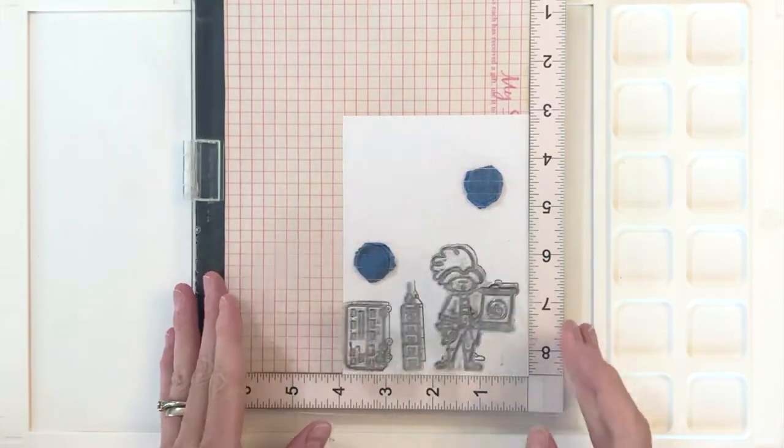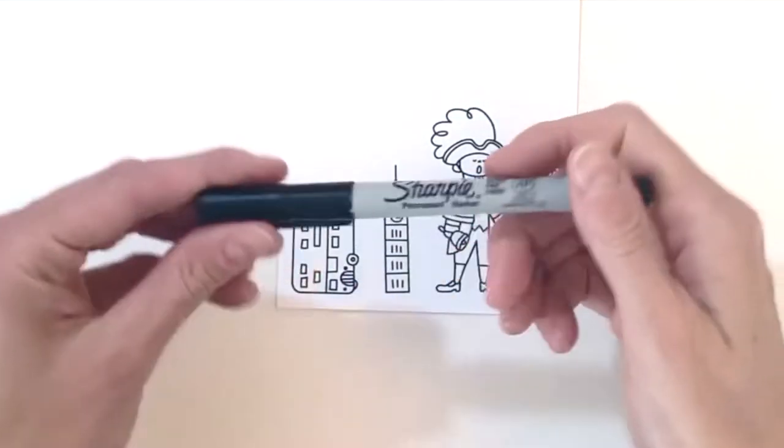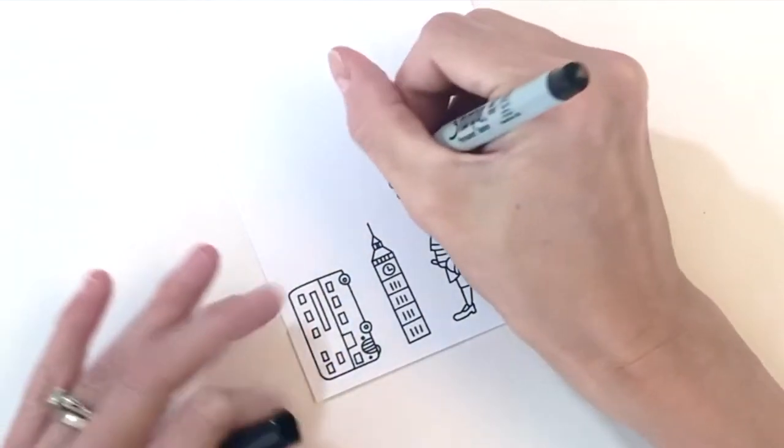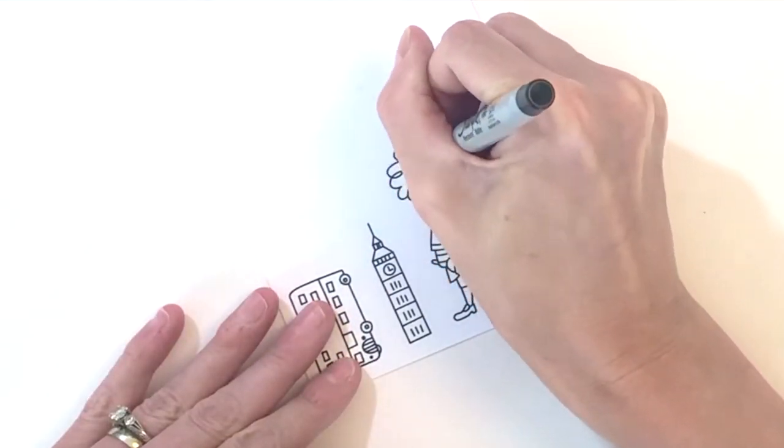I actually didn't know what that was until the set came out and then I looked it up. So I just stamped the images on 110 pound white cardstock in Memento Tuxedo Black.